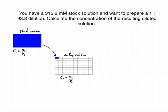In this example, we want to calculate the concentration of a diluted working solution. We have a stock solution with a given volume and a dilution factor. Here the dilution factor is 1 to 93.8. So what are we doing? How can we think about it? We have our stock solution and this has 315.2 millimolar.